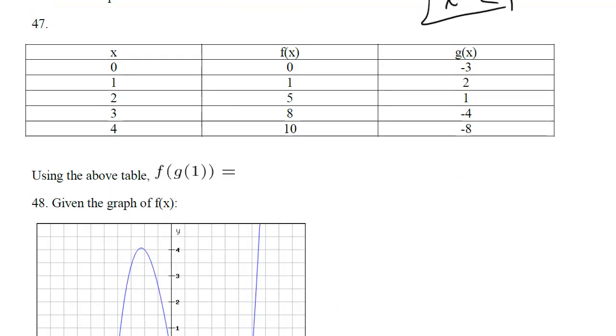Alright here we're given a table and we want to know what is f of g of 1 equal. Well first let's figure out what g of 1 is. So here's our x and here's our g of x. When x is 1, g of x is 2. So this is equal to f of 2, right, because g of 1 is 2.